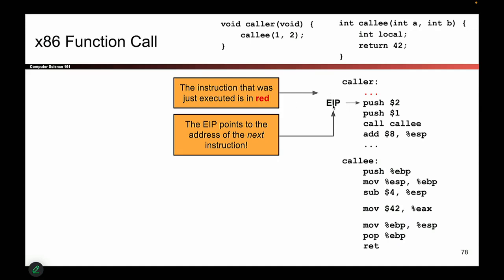Remember, EIP is a register. It holds an address. If you go to that address, it's the next instruction that's executing. So this will remind us of where we are in the code, and in the program, the EIP as a register tells us where we are.